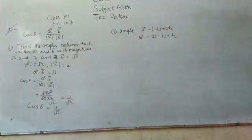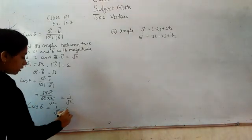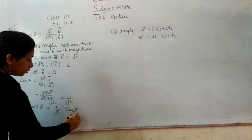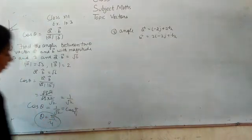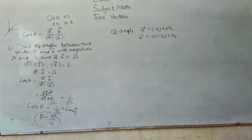So 1 by root 2 is pi by 4. So this is cos pi by 4, so theta is pi by 4. So which angle are we making? Pi by 4. So which angle are we making? This is 2 vectors, so which angle are we making? That is pi by 4 vectors.